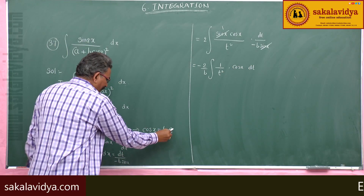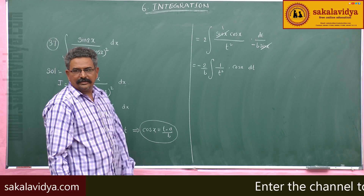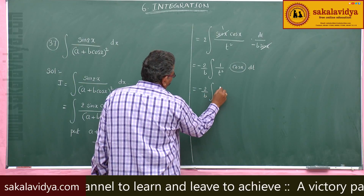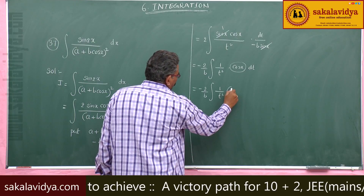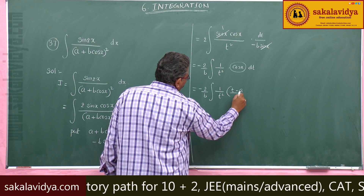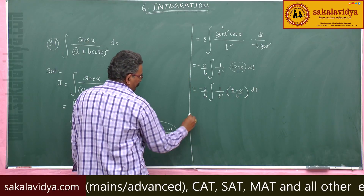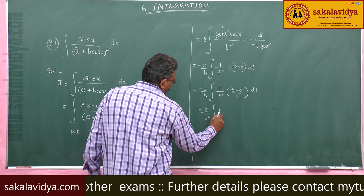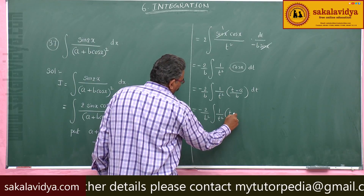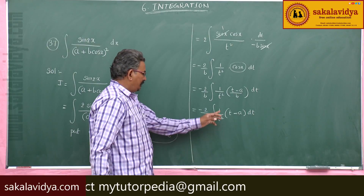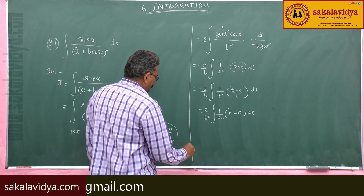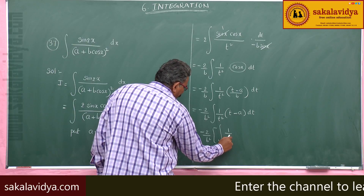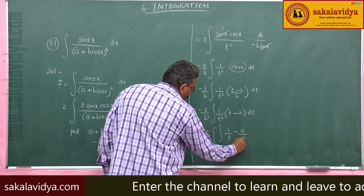We now have minus 2 over b times the integral of (1 over t squared) times cos x dt. The value of cos x is (t minus a) over b, so replacing it gives minus 2 over b times the integral of (1 over t squared) times (t minus a) over b dt. Taking out 1 over b gives minus 2 over b squared times the integral of (t minus a) over t squared dt.